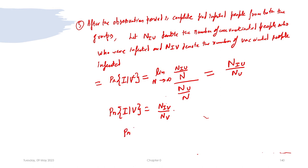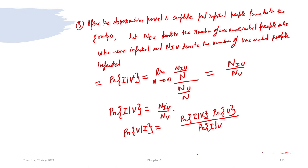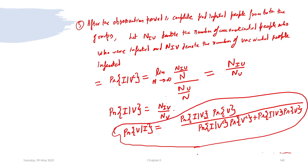This can also help you determine: if you pick any infected individual at random, the probability of that person being vaccinated can be obtained using Bayes' theorem. Naturally, the probability of a randomly selected infected individual being vaccinated is directly proportional to the probability of a vaccinated individual being infected. So using Bayes' theorem we can determine the efficacy of a vaccine.